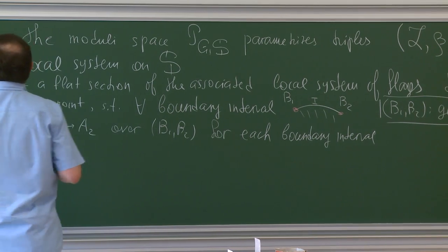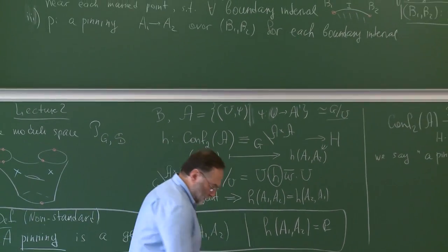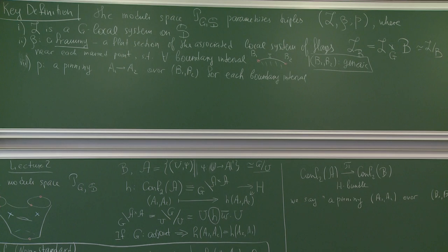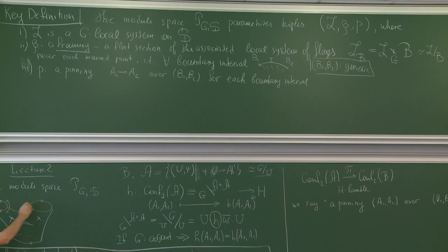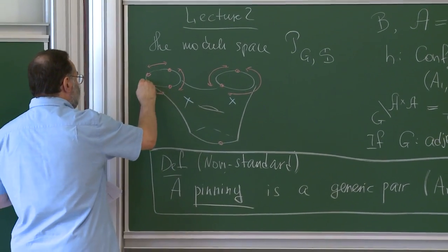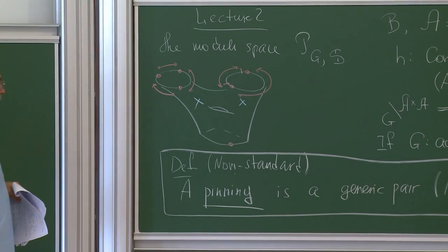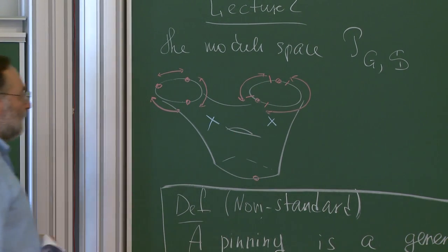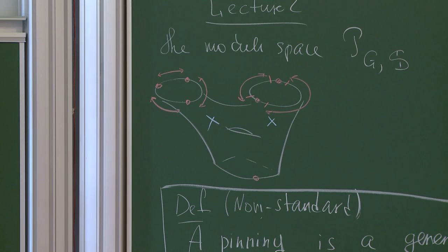Here is how this looks on a picture. We have flags at the boundary points, and in addition we now have pinnings. A pinning means we have a pair of decorated flags over each boundary-interval pair. Near each special point, we actually have two nearby decorated flags. So this is the data.